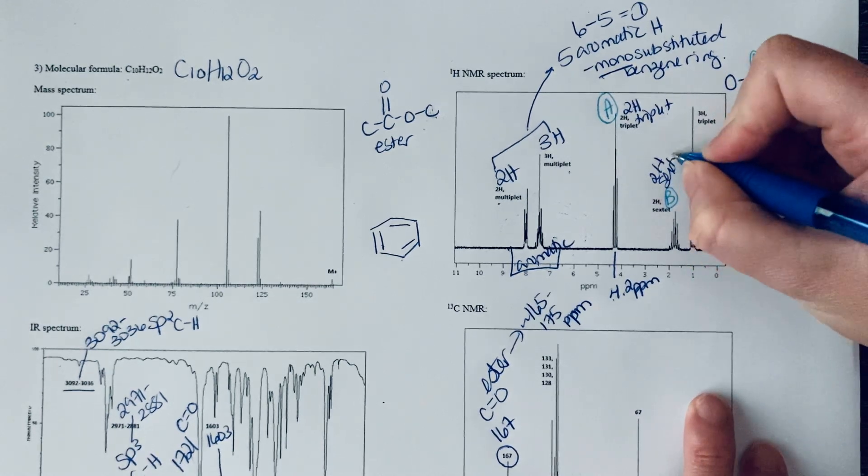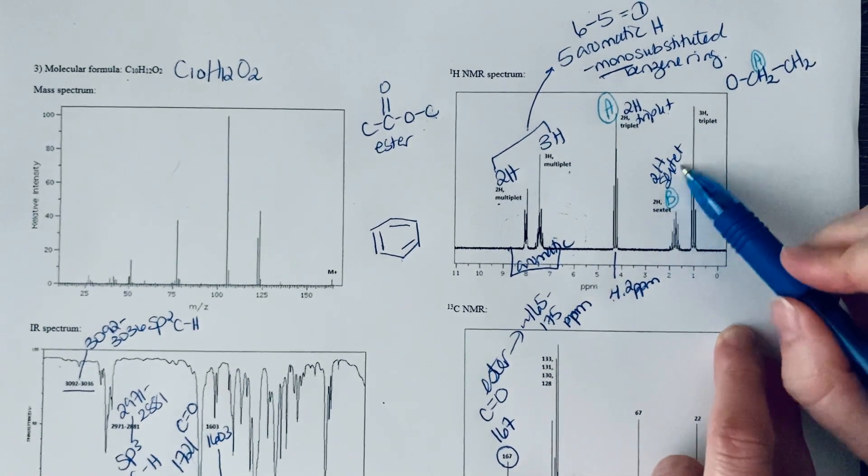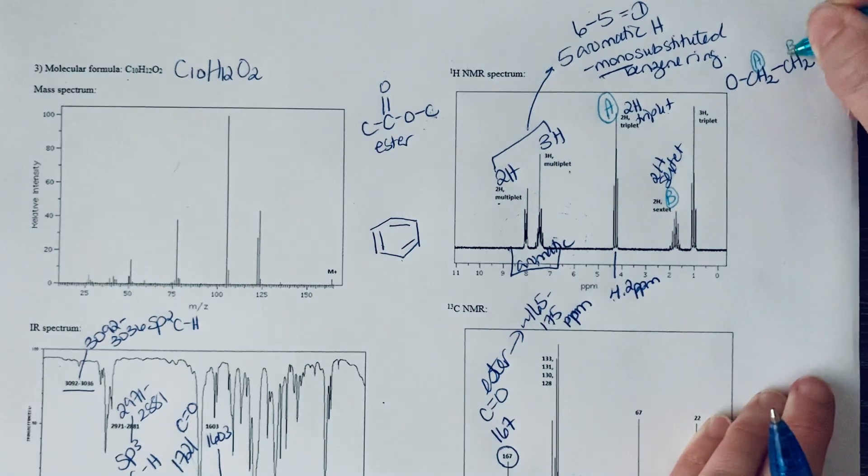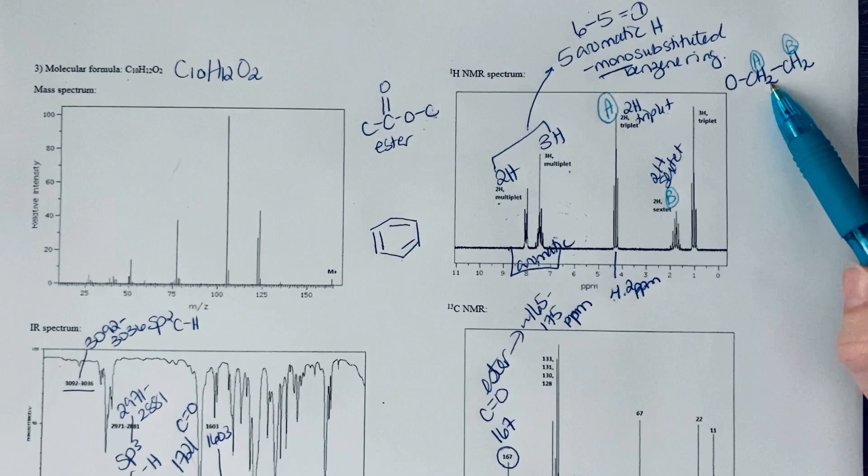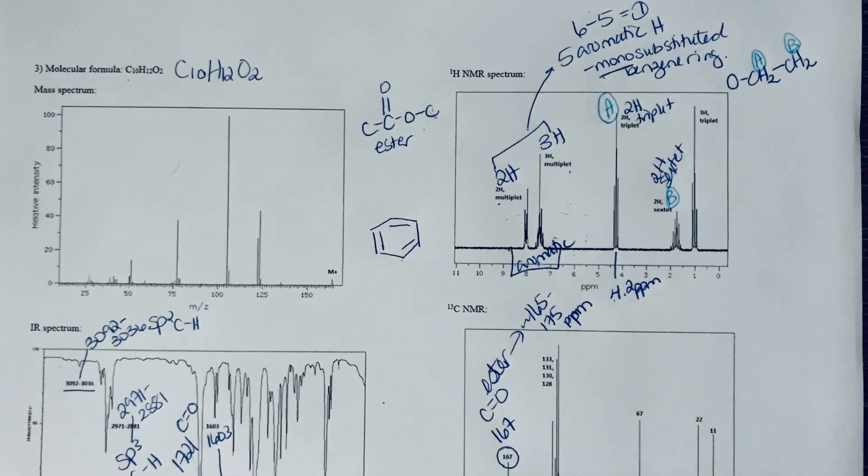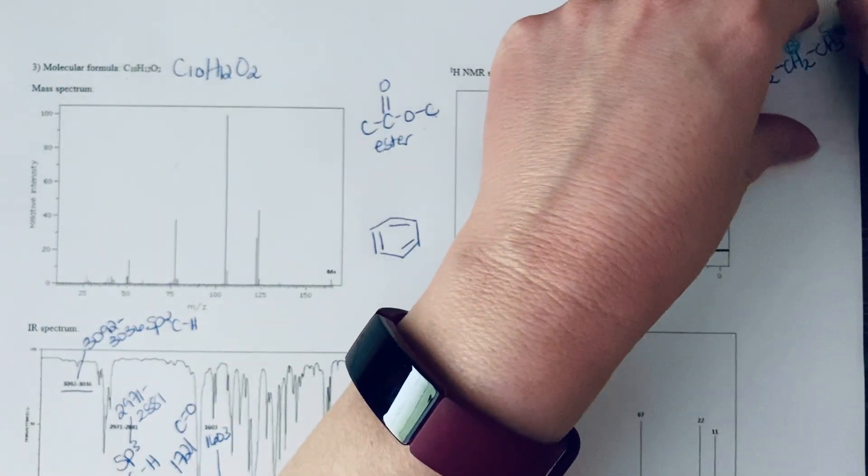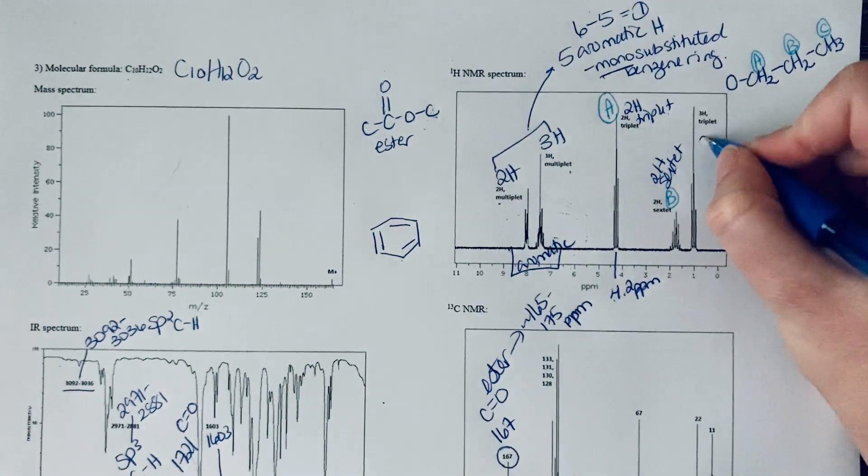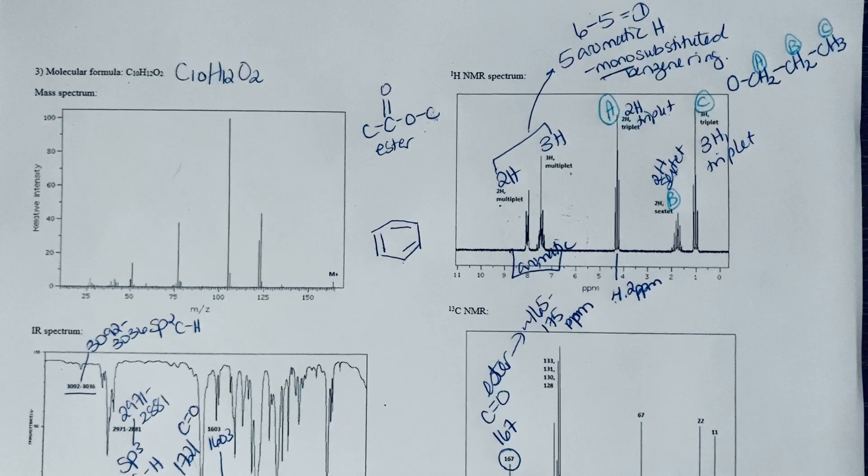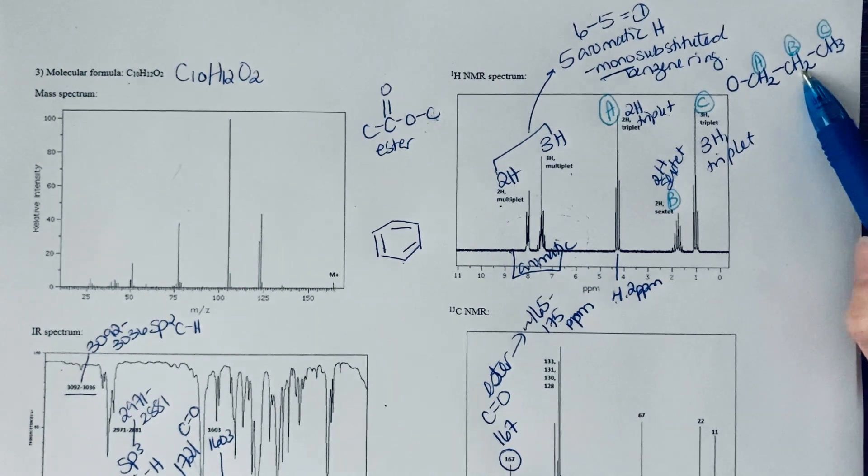This is a two hydrogen sextet. A sextet means it's split into six, so it has five neighbors. If we see two neighbors on one side, we need to have three neighbors on the other side, and we still have a signal that looks like a CH3. This final signal is a three hydrogen triplet. That three hydrogen triplet makes sense: three hydrogens because it's CH3, a triplet because it's next door to the two.